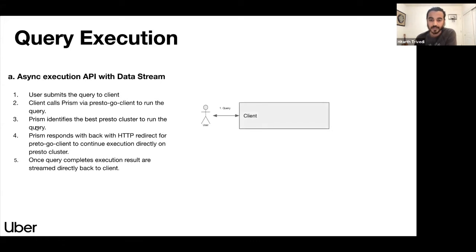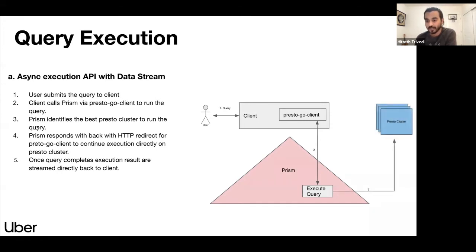In this mode, user is submitting the query to client. The client is using Presto go client to talk to Prism directly. And it is submitting the query to Prism. Now Prism knows which cluster to talk to, and it will forward the query to the Presto cluster, and it will make the initial post call needed to run the query. After making the post call, Prism is going to redirect the control back to Presto go client and the subsequent get calls then happen directly from go client to the chosen Presto cluster. Once the query completes, the results are streamed directly back to the client from Presto cluster and back to the user.